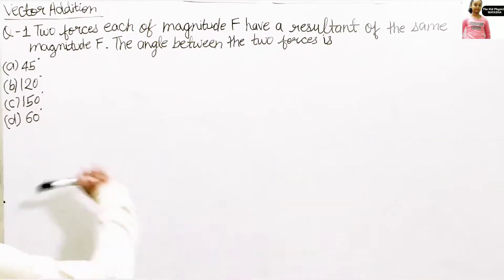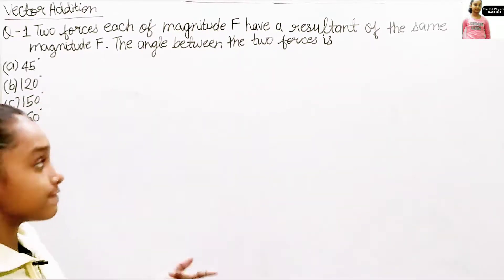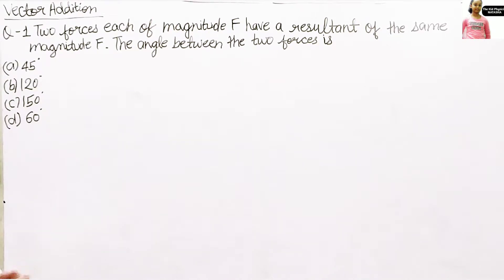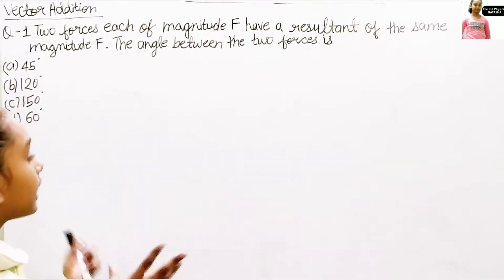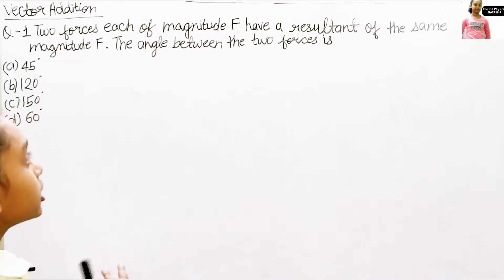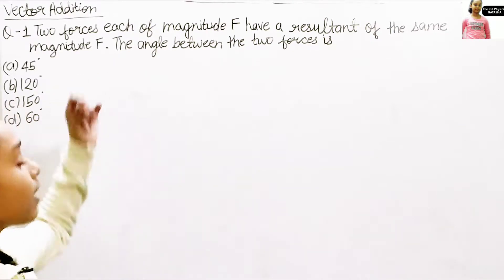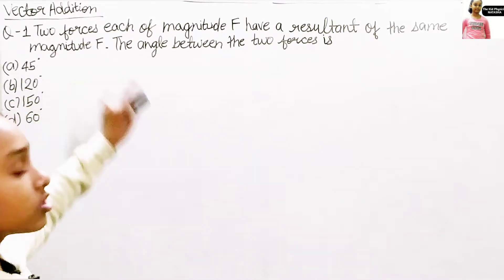Question number 1: Two forces each of magnitude F have a resultant of the same magnitude F. The angle between the two forces is — four options are given: first one is 45 degrees, second one is 120 degrees, third one is 150 degrees, and the fourth one is 60 degrees. So there are two forces, both with magnitude F, and the resultant also has magnitude F. We have to find the angle theta between those two forces.